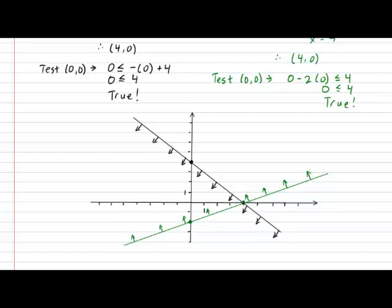Next, let's draw the line that represents our third inequality: x greater than or equal to zero. The line x equals zero is simply the vertical line that goes straight up. Here, drawn in red, that line represents when x values are all equal to zero. As for the shaded region, the inequality states that x must be bigger than zero. Therefore, it represents the area to the right of that line, because anything to the right is bigger than zero.